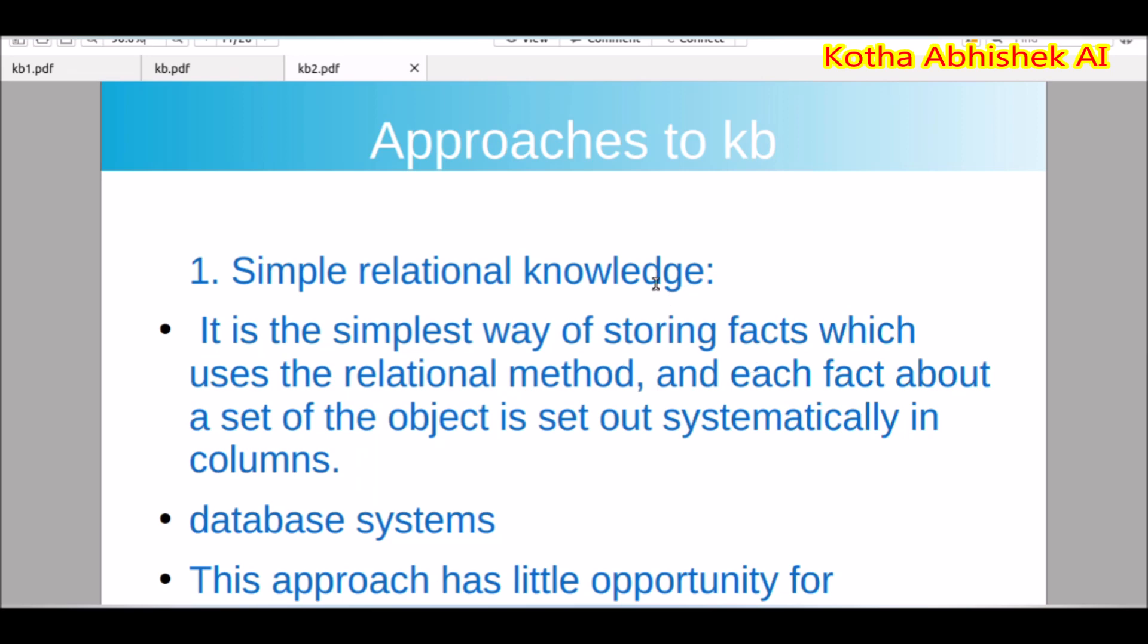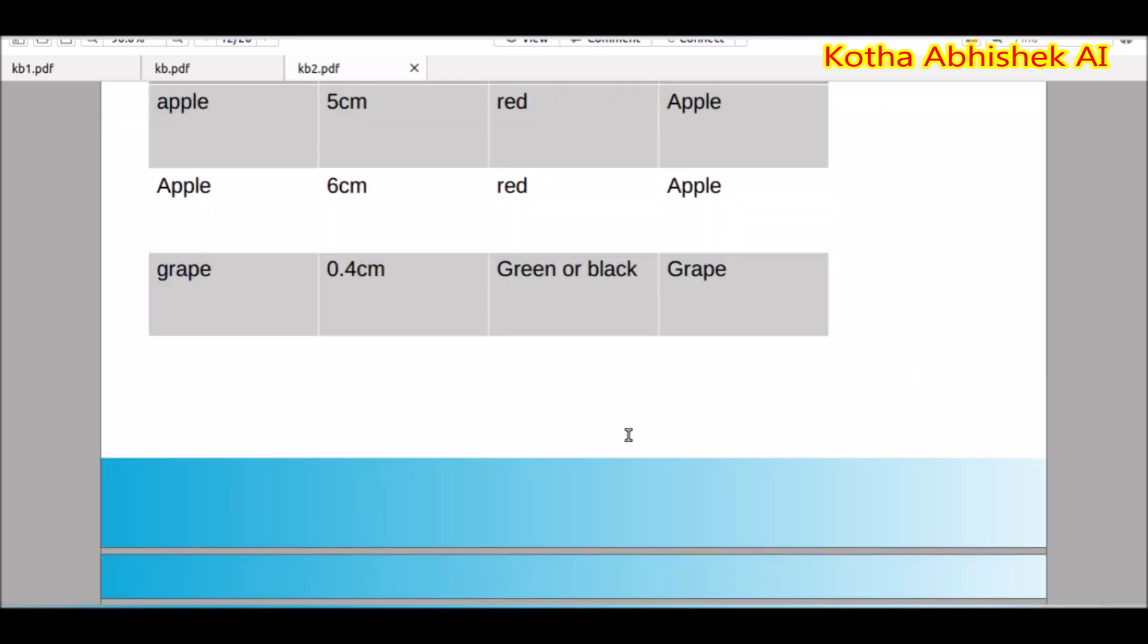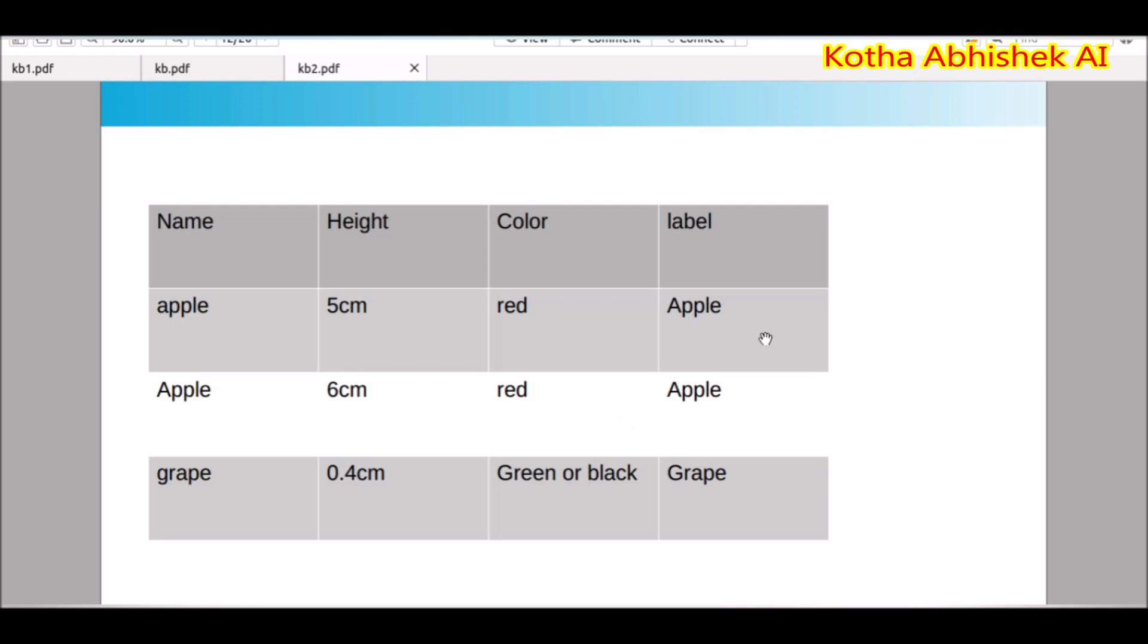Now, this is the knowledge base in our system. There are some approaches. Let us know about them. First thing, simple relational knowledge. It is the simplest way for storing anything. It is like relational model. You can see an example that is database system, which is very frequently used. We will have columns, rows, and at the end there is a label which is called output. There are even some databases which don't have a label. This is one type of approach.